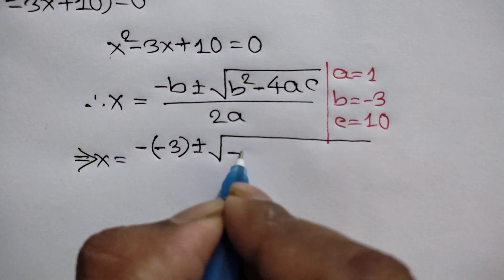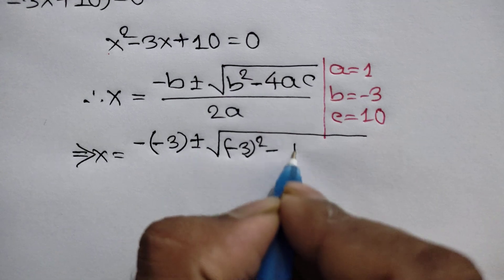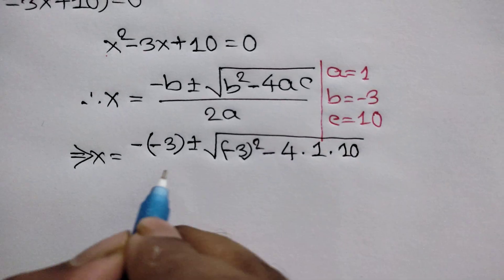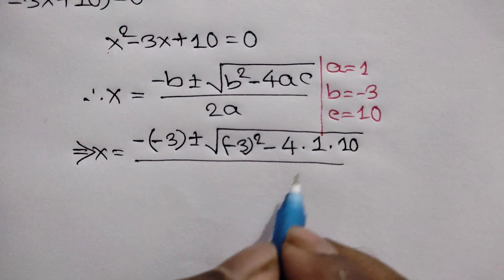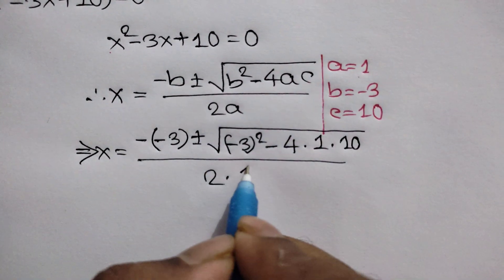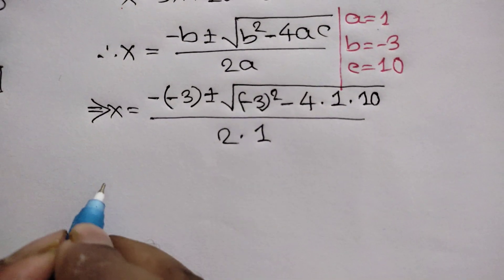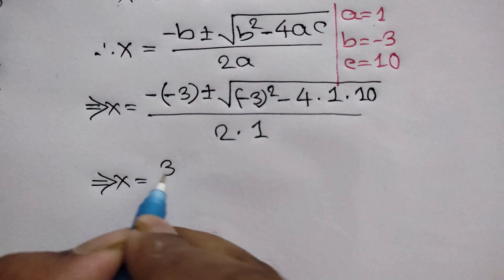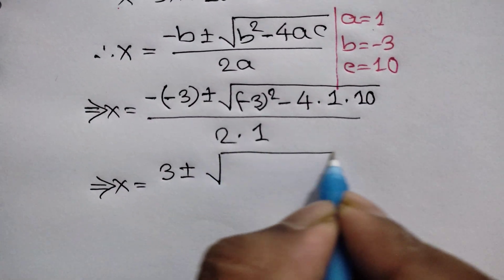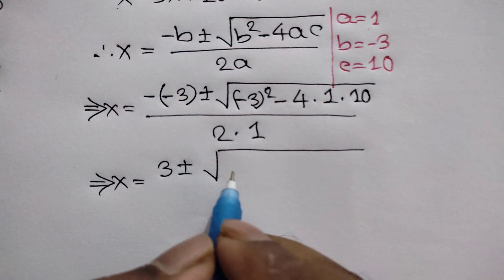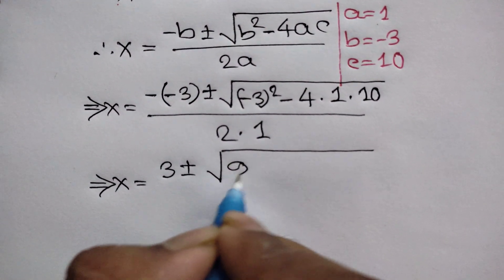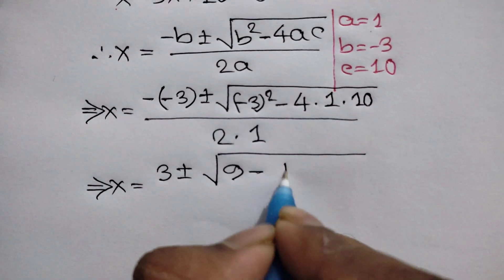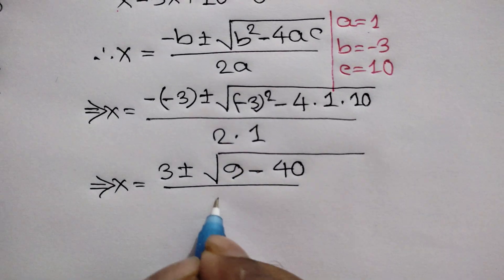...b squared, that means negative 3 squared, minus 4 times a, which is 1, times c, which is 10, over 2 times a, which is 1. So we get 3 plus or minus the square root of: negative 3 times negative 3 is 9, minus 4 times 10 is 40, over 2 times 1 is 2.